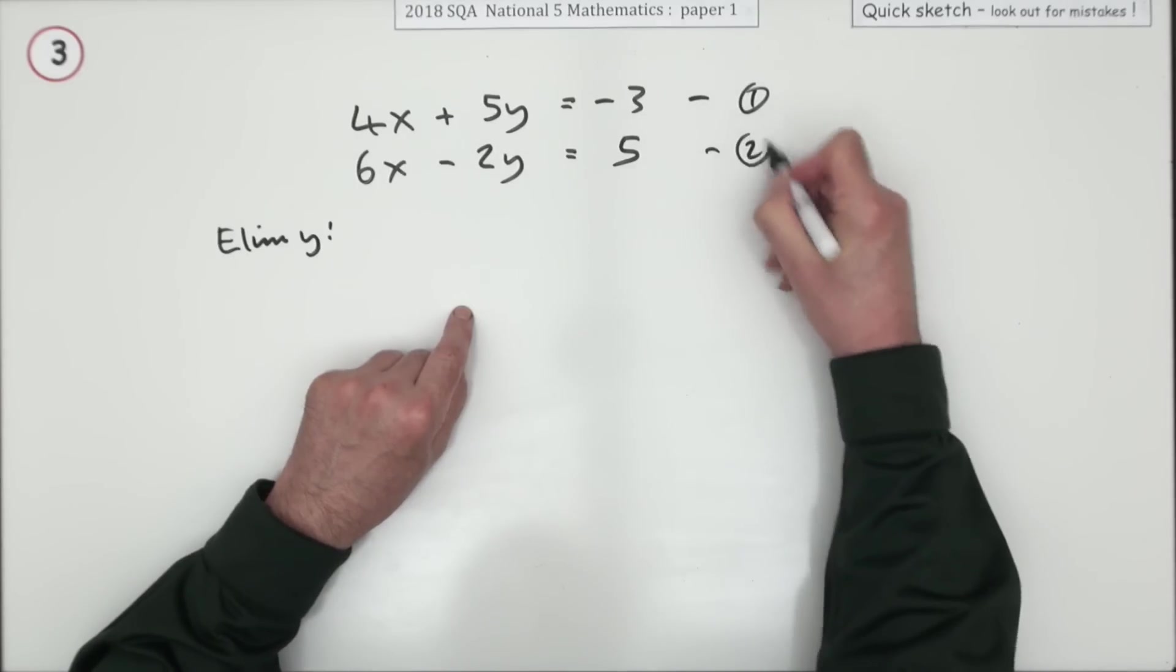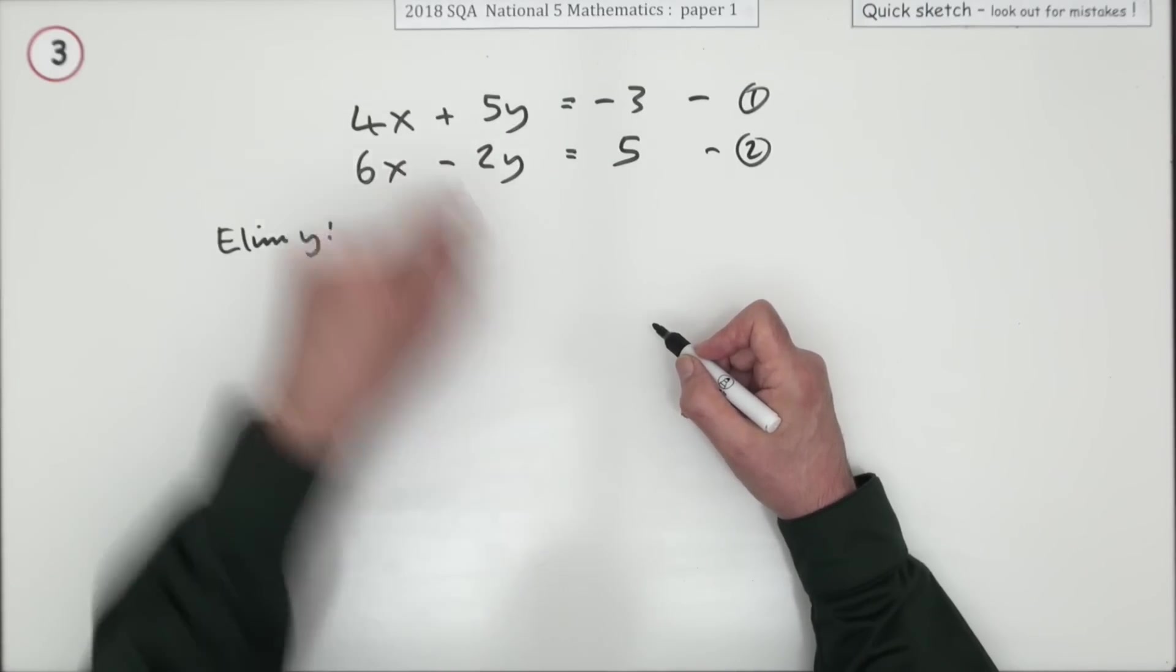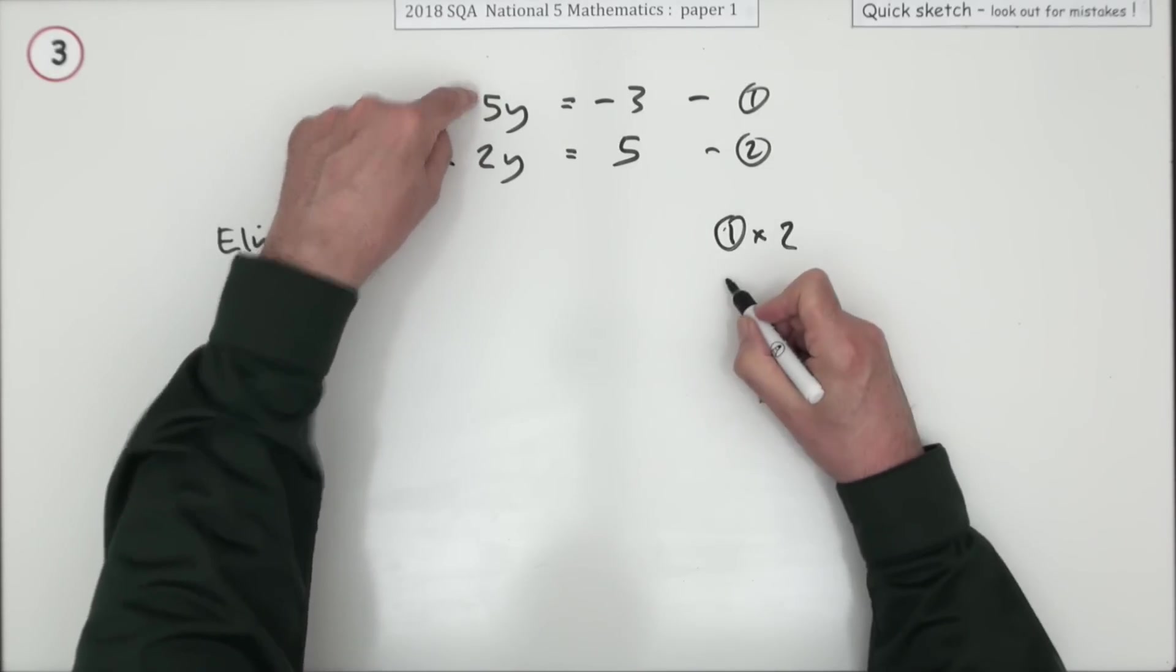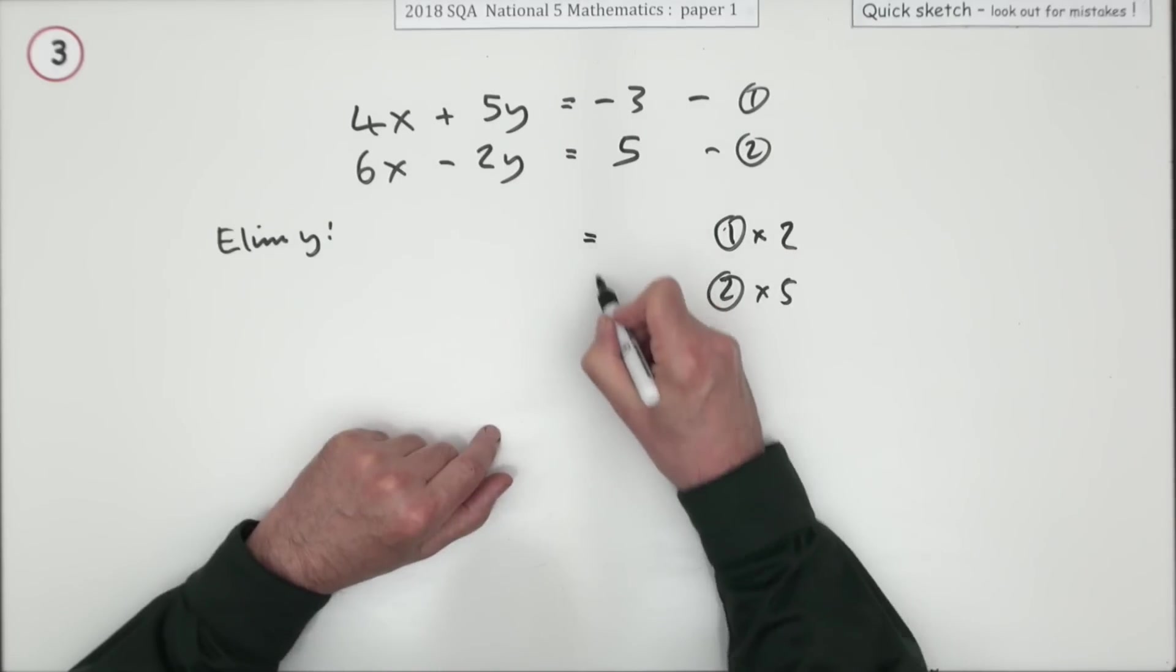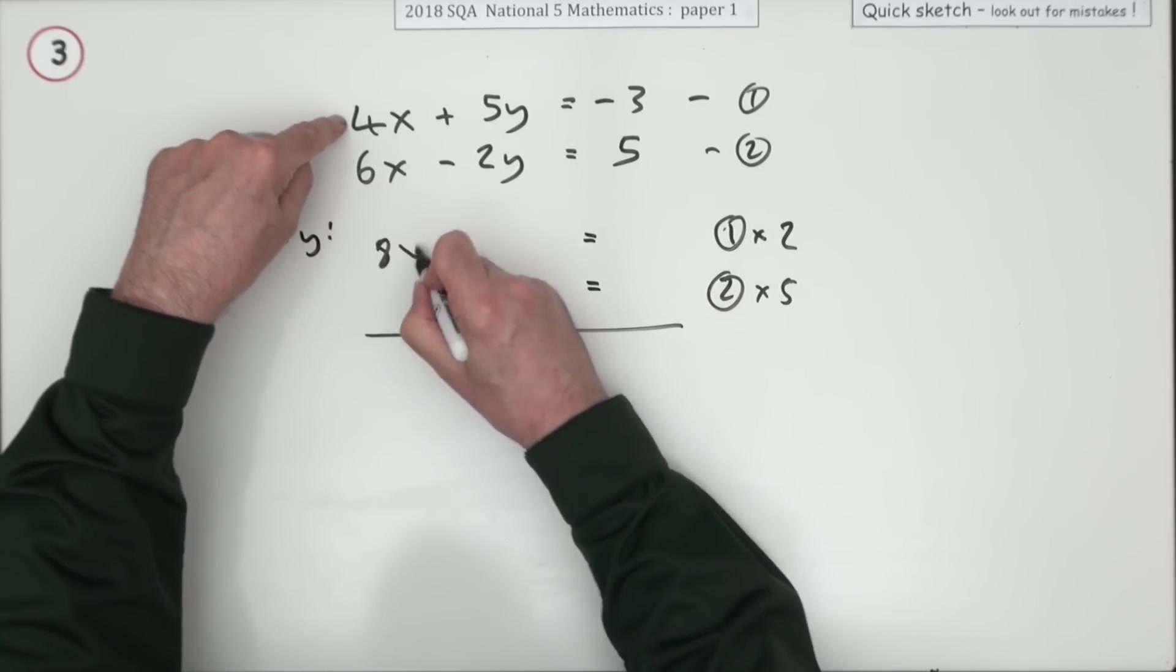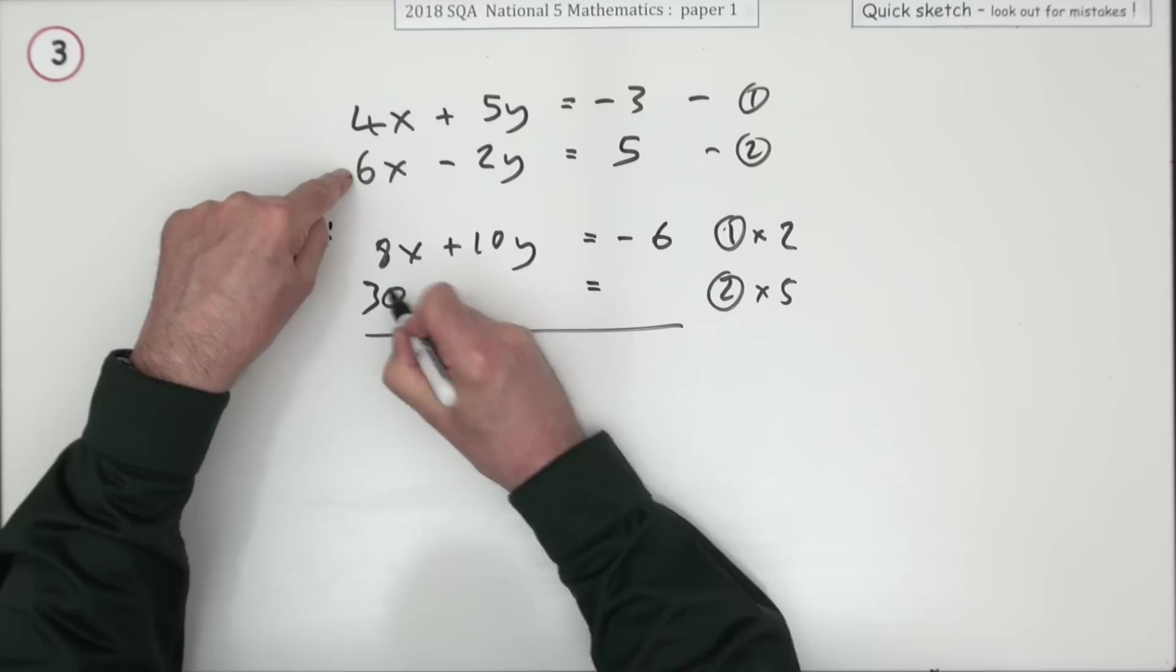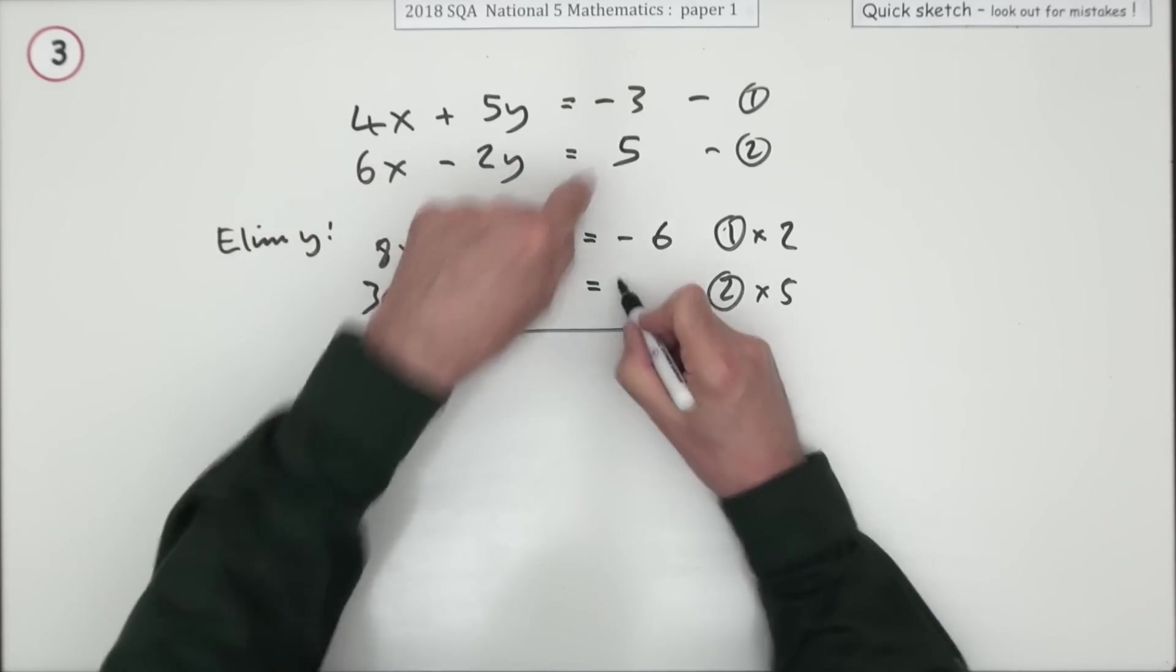I've got equation 1 and equation 2. If I can make them both into the same number and add them they'll disappear. Well 5 and 2 both divide into 10. So if I do equation 1 times 2 and equation 2 times 5 all should be well. And then I just add them up. So it's double this. 8x plus 10y is negative 6. 5 times this. 30x minus 10y equals 25.